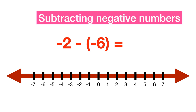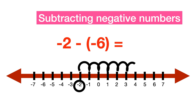Subtracting negative numbers. To subtract two numbers on a number line, move to the right with reference to the value of the second number. First, locate minus 2 on the number line. Minus minus becomes positive, so move 6 steps to the right, which gives 4 — the correct answer.